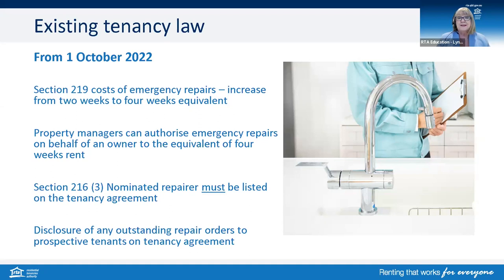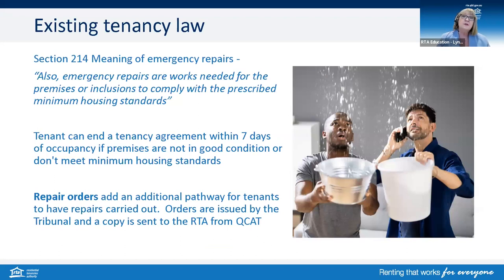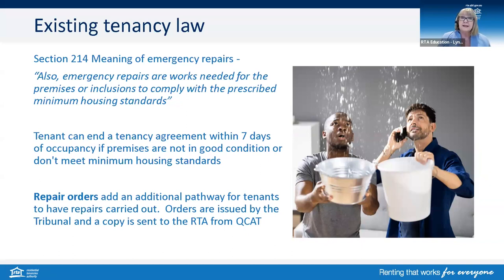Repair orders came into effect last year and we do have a fact sheet and video resource on that particular topic. What constitutes an emergency repair is outlined under section 214 of the legislation. An additional section has been added to include works required to comply with prescribed minimum housing standards. A tenant can also end a tenancy within seven days of occupancy if the premises are not in good condition, and as of 1 September, if the premises don't meet minimum housing standards. Tenants would need to give 14 days notice to the landlord or agent, but if there is a dispute over the condition, either party can lodge a dispute resolution request with the RTA.